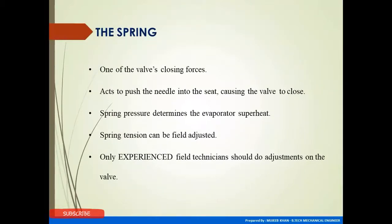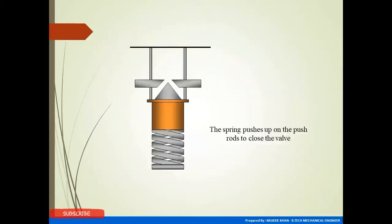One of the valve closing forces acts to push the needle into the seat, causing the valve to close. Spring pressure determines the evaporator superheat. Spring tension can be field-adjusted, but only an experienced field technician should perform this adjustment. The spring pushes up on the rod to close the valve. When the spring moves upward, the valve is closed, stopping refrigerant flow.